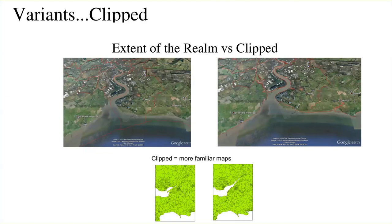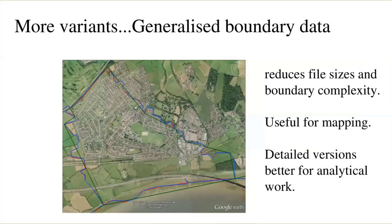There are variations to some geographic products that sometimes confuse lay users. Essentially there are two core variants: one is a clipped version of the boundaries that don't extend to the extent of the realm — essentially the mean high water/mean low water spring — used in administrative contexts. Most people would be more familiar with the clipped versions. There's also a generalized version, where a significant proportion of detail is removed to reduce both file size and boundary complexity.